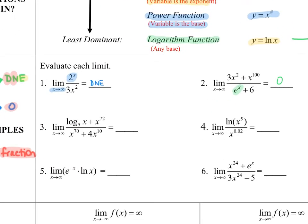In question number three, in the numerator the only thing I'm concerned with is x to the 72. That log doesn't contribute anything, so I'm really comparing x to the 72 and x to the 70 in the denominator. The 72 is the larger power, so I have a dominant numerator on this one. This is a DNE.